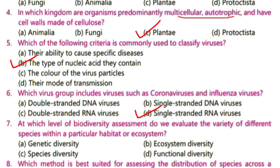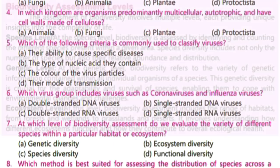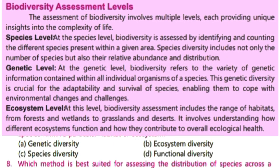MCQ number 7: at which level of biodiversity assessment do we evaluate the variety of different species within a particular habitat or ecosystem? We have three levels for the assessment of biodiversity: species level, genetic level, and ecosystem level. The species level involves identification and counting of different species within a given area — this is the correct option. The genetic level refers to the variety of genetic information within all individuals of a species, while the ecosystem level includes the range of habitats to understand how different ecosystems function.